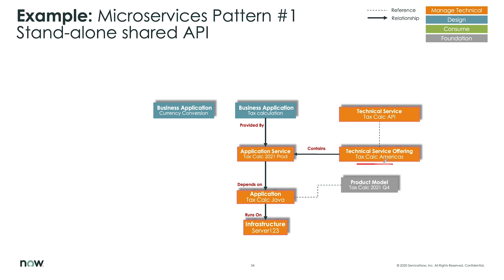In this scenario, we're actually showing how you can create a technical service offering, which is the tax calculation for Americas, for example, and different product models might be used for different particular jurisdictions or countries, things like that. In this case, we're looking at one specific for the Americas.